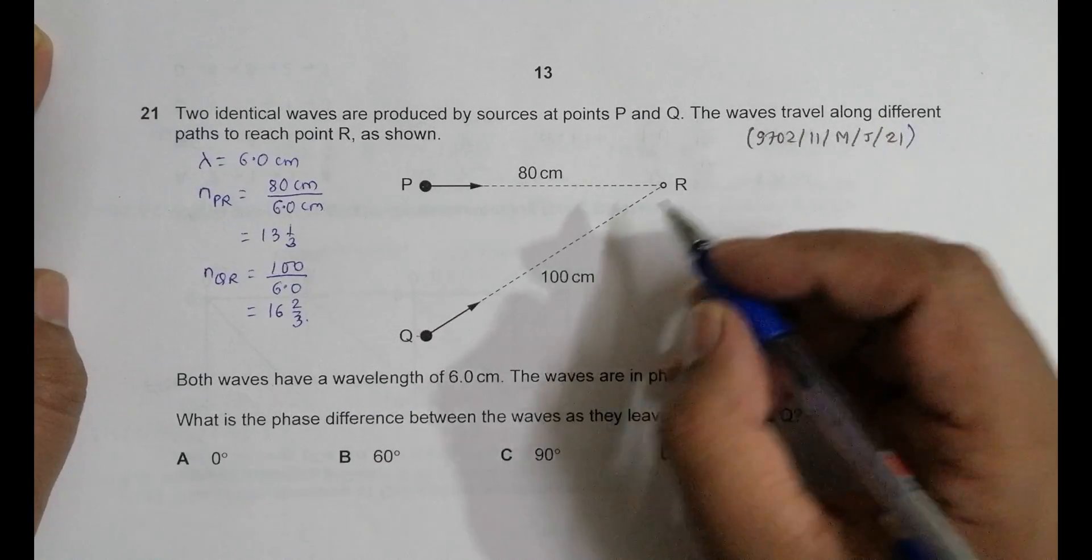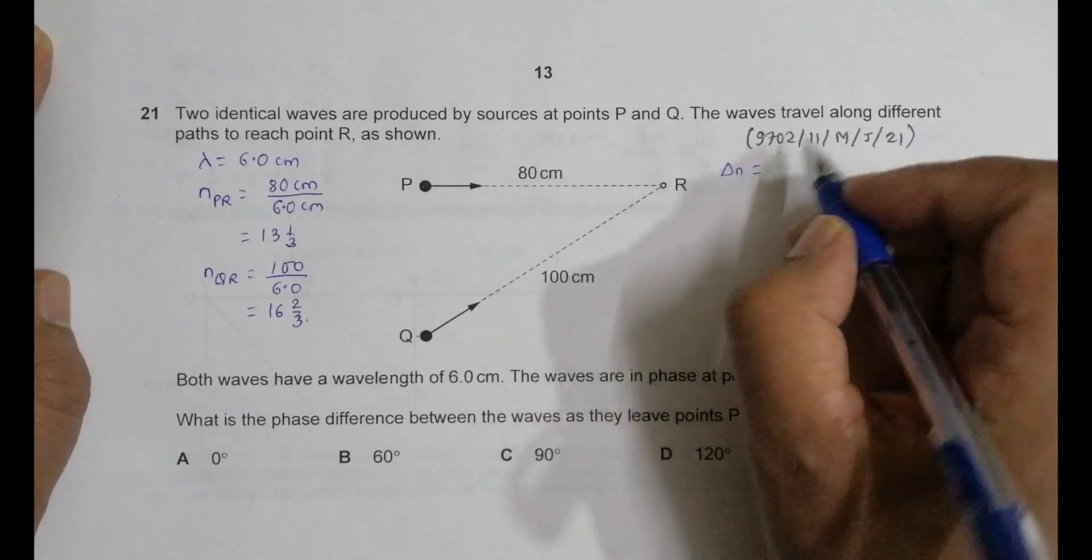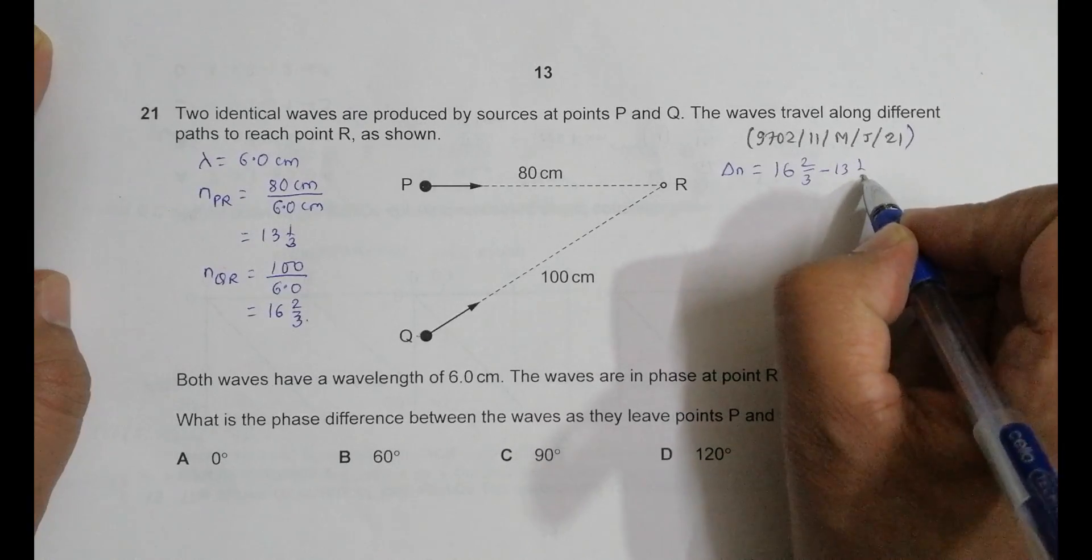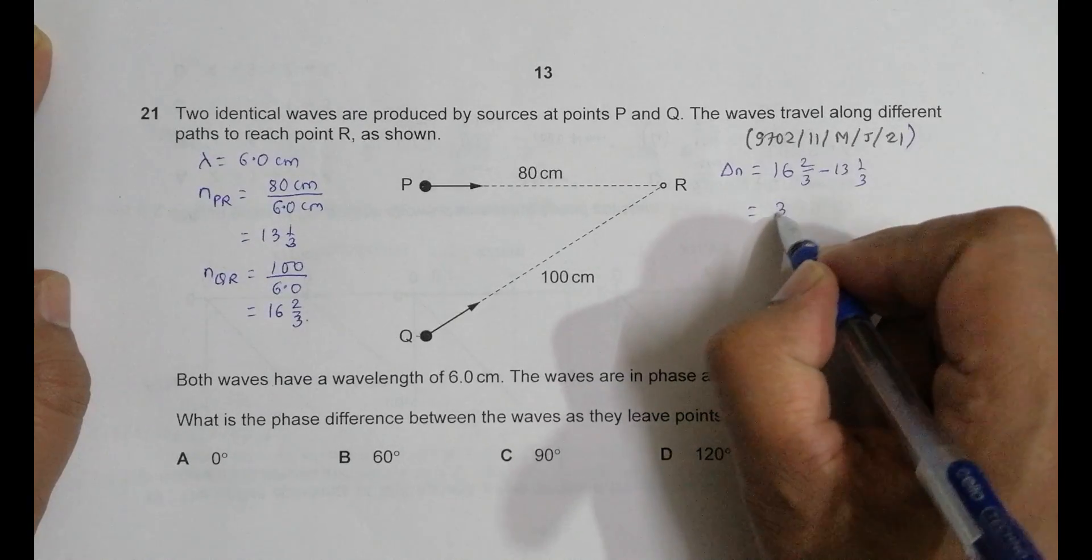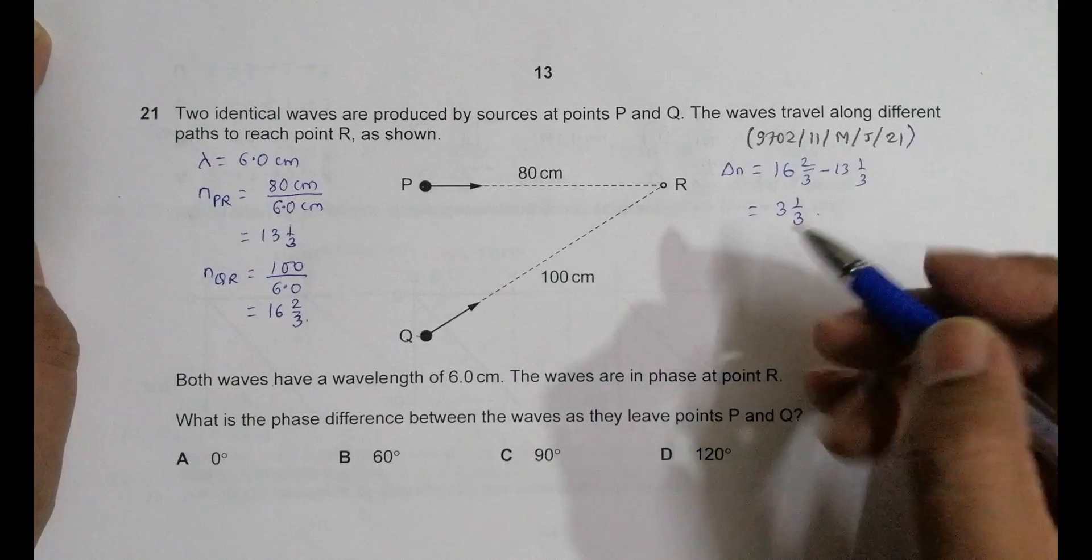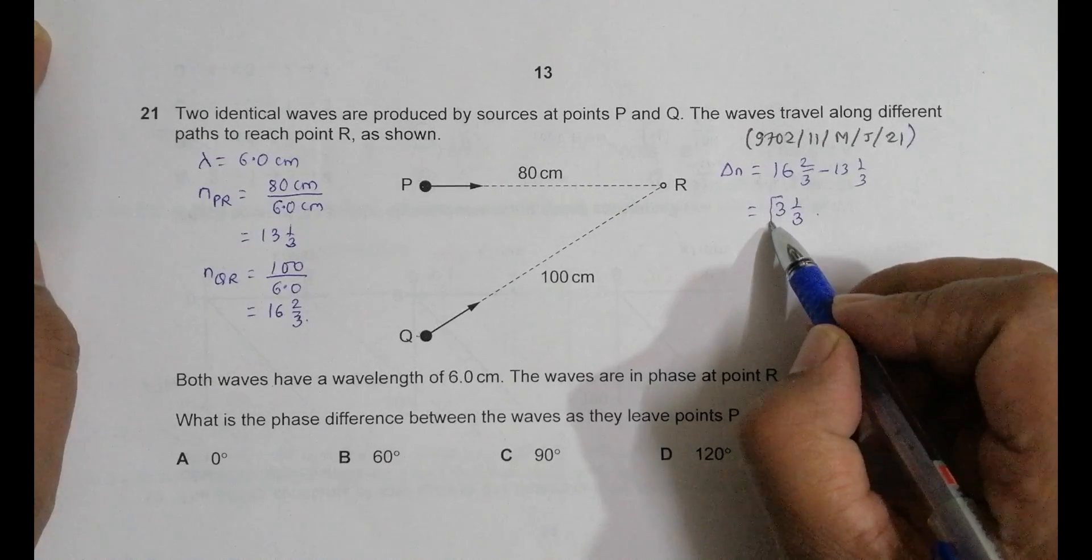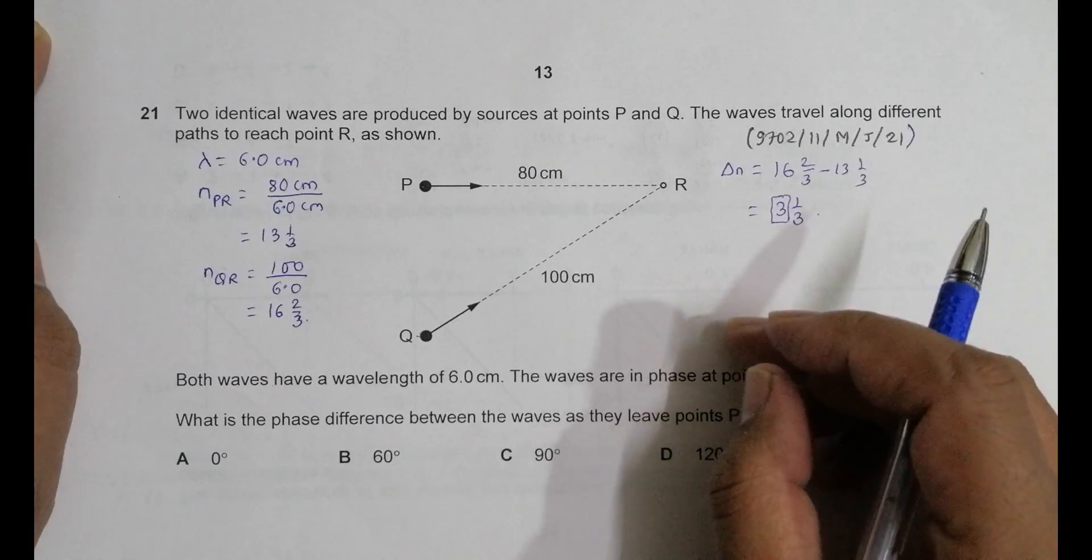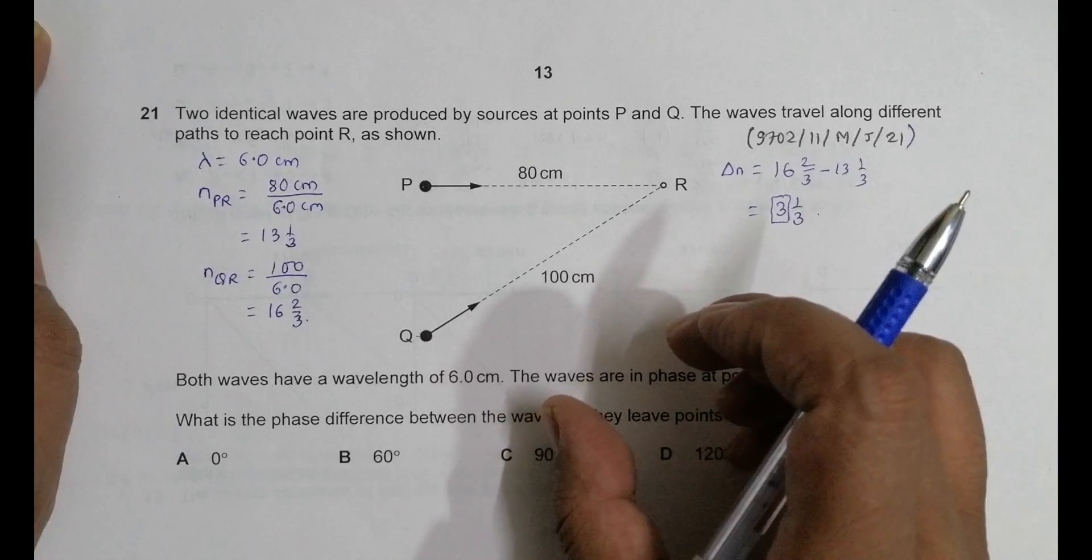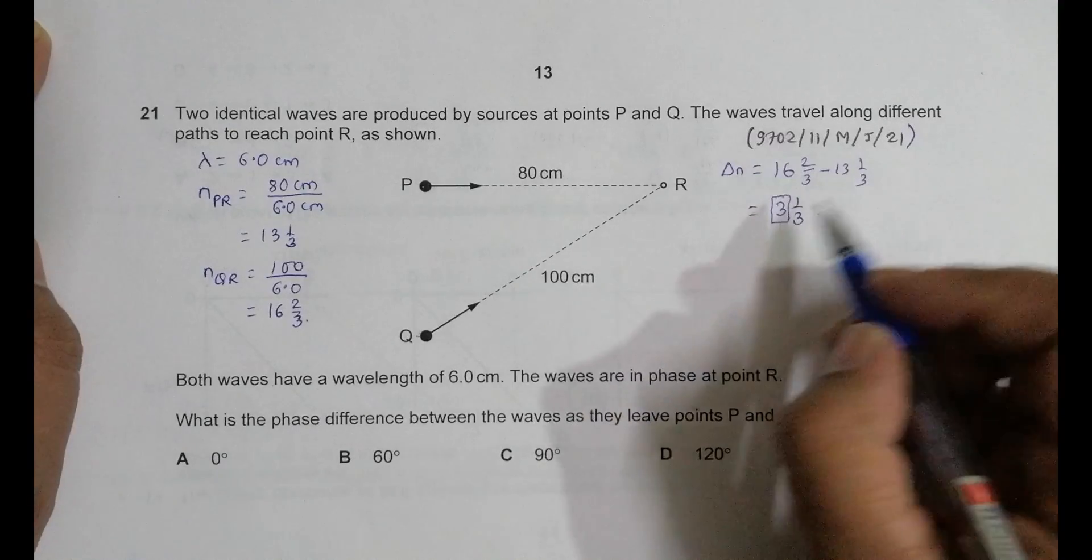So then the difference in the number of waves, delta N, let us say that's equal to 16 2/3 minus 13 1/3, which becomes 3 1/3. So the wave difference is equal to 3 and then 1/3. So this thing does not contribute to the phase difference because if some wave differs by three waves, the phase difference will be 3 into 360 degree which is again equal to zero degree.